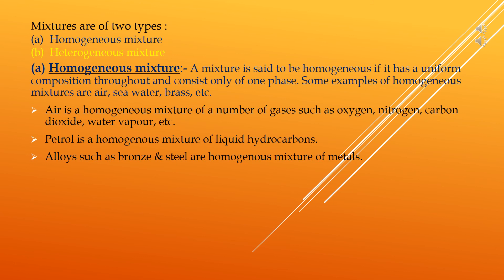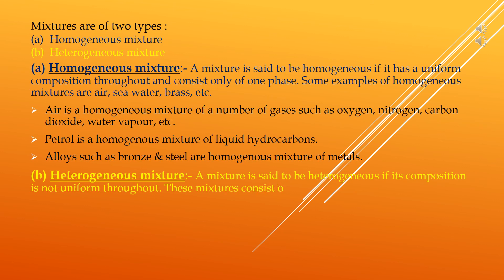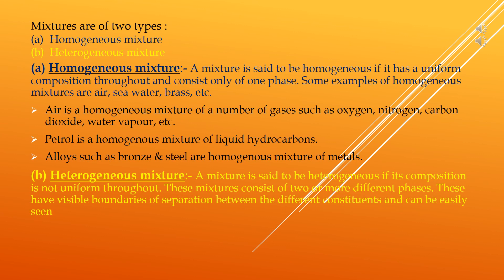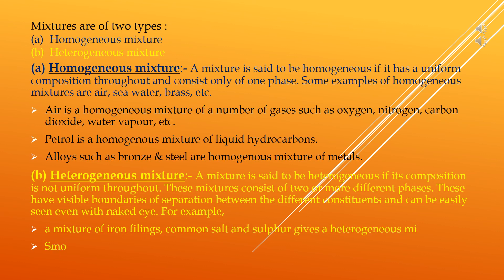The second type is a heterogeneous mixture, where the composition is not uniform throughout. These mixtures consist of two or more different phases and have visible boundaries of separation between different constituents, even with the naked eye. For example, a mixture of iron filings, common salt, and sulfur gives a heterogeneous mixture. Smoke is a mixture of carbon particles and air — the carbon particles can be easily seen, making it a heterogeneous mixture.